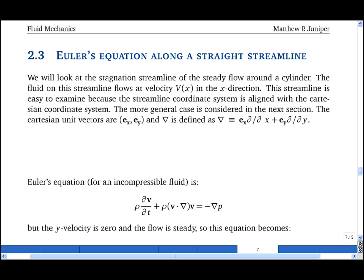Here we will apply Euler's equation along a straight streamline. And to make the analysis very easy, we will align this streamline with the x-direction, such that the velocity vector v is equal to some scalar that I shall call V times the unit vector in the x-direction.